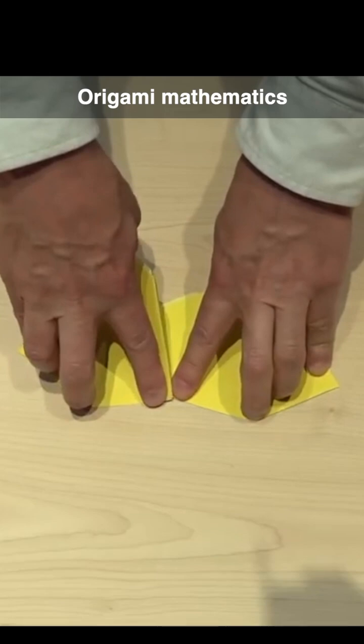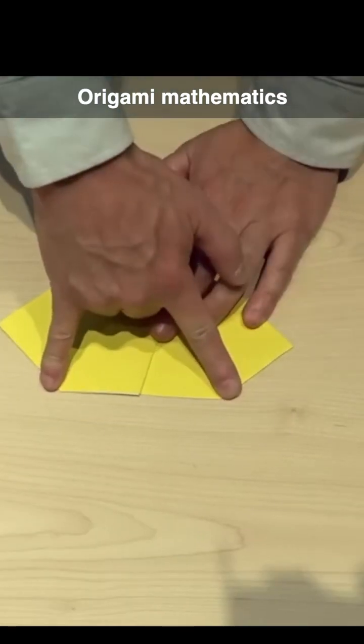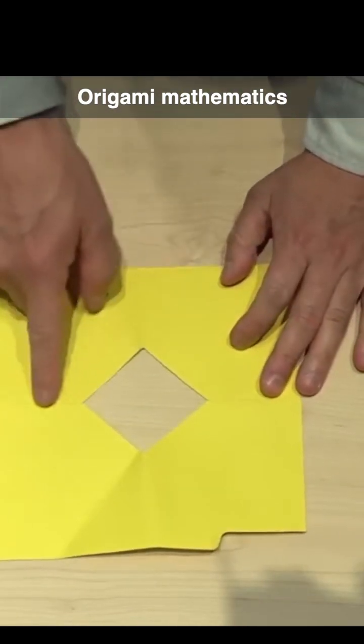And as those two segments are aligned, I squash and crease. Then the gap that I have created is no longer the diagonal, but it's actually the sum of those two sides.